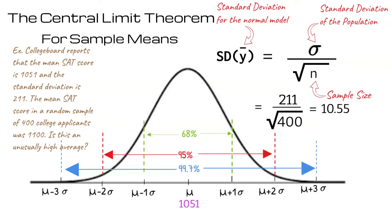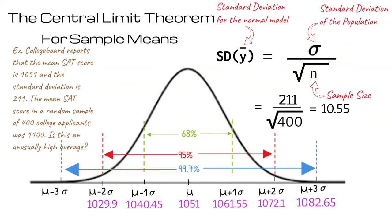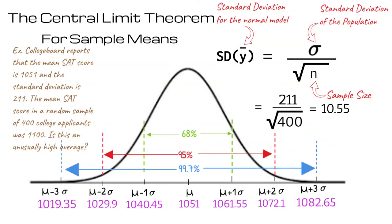Now we add 10.55 to 1051 to get 1061.55. We add the standard deviation again to get 1072.1 and once more to get 1082.65. We take 10.55 from 1051 to get 1040.45. We take the standard deviation away again to get 1029.9 and once more to get 1019.35.